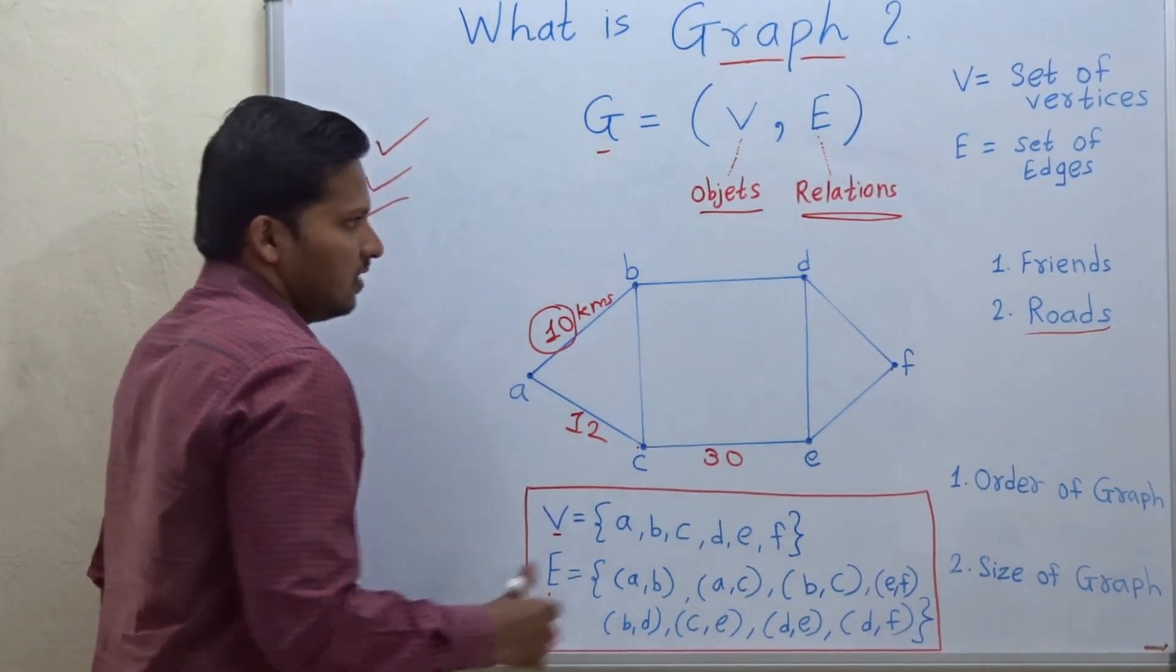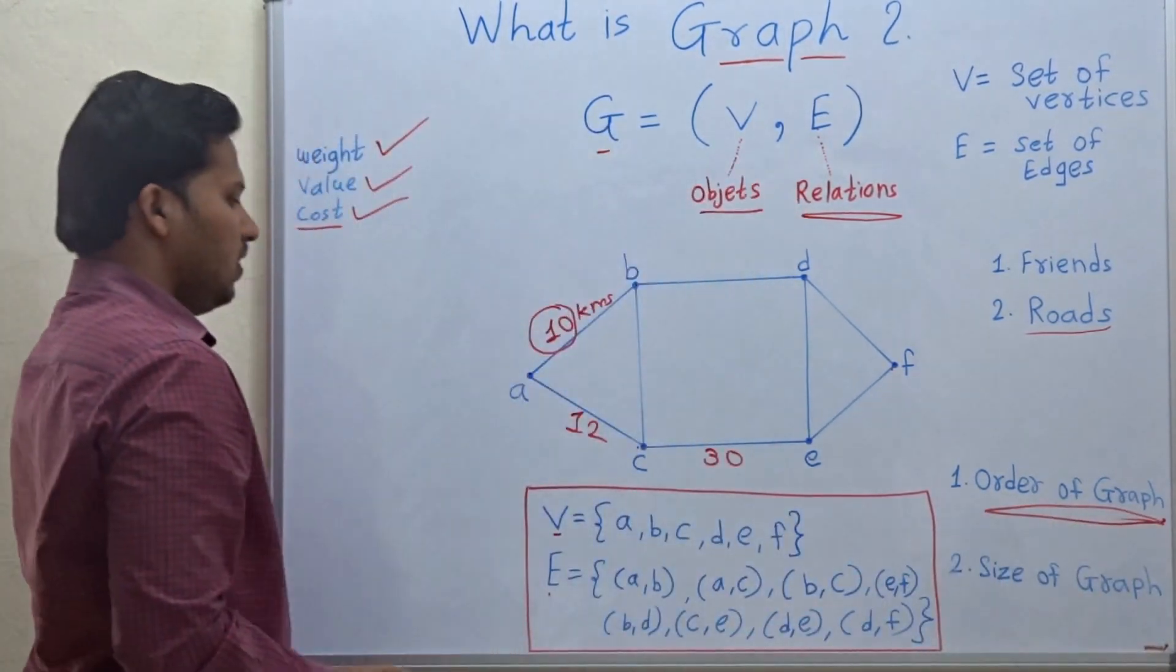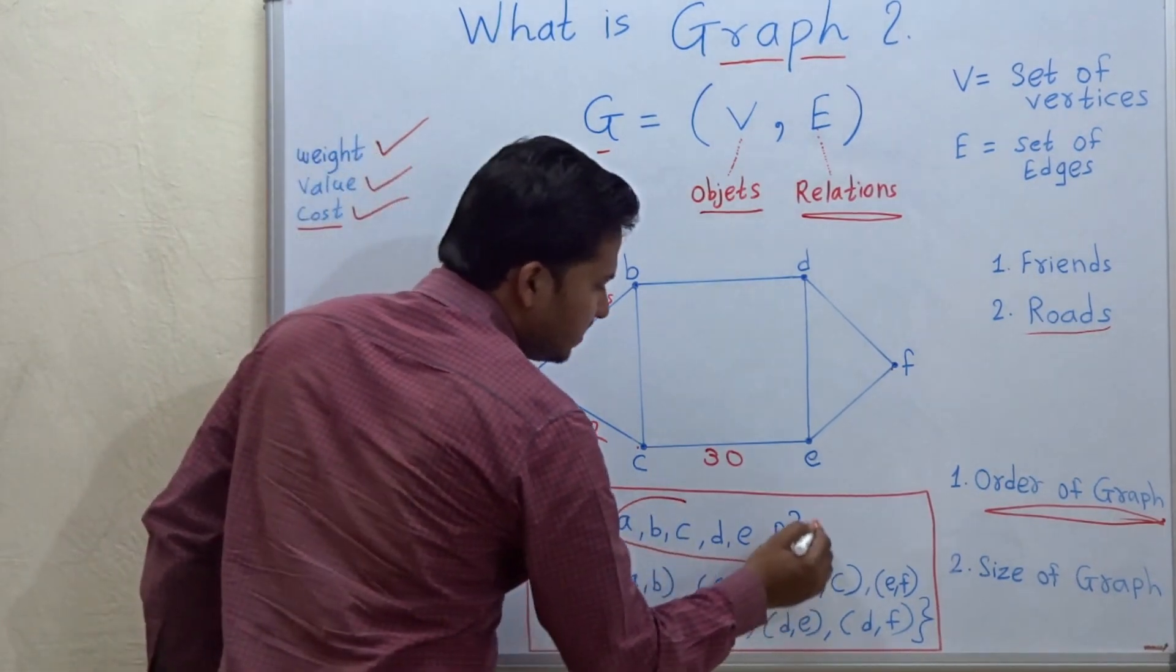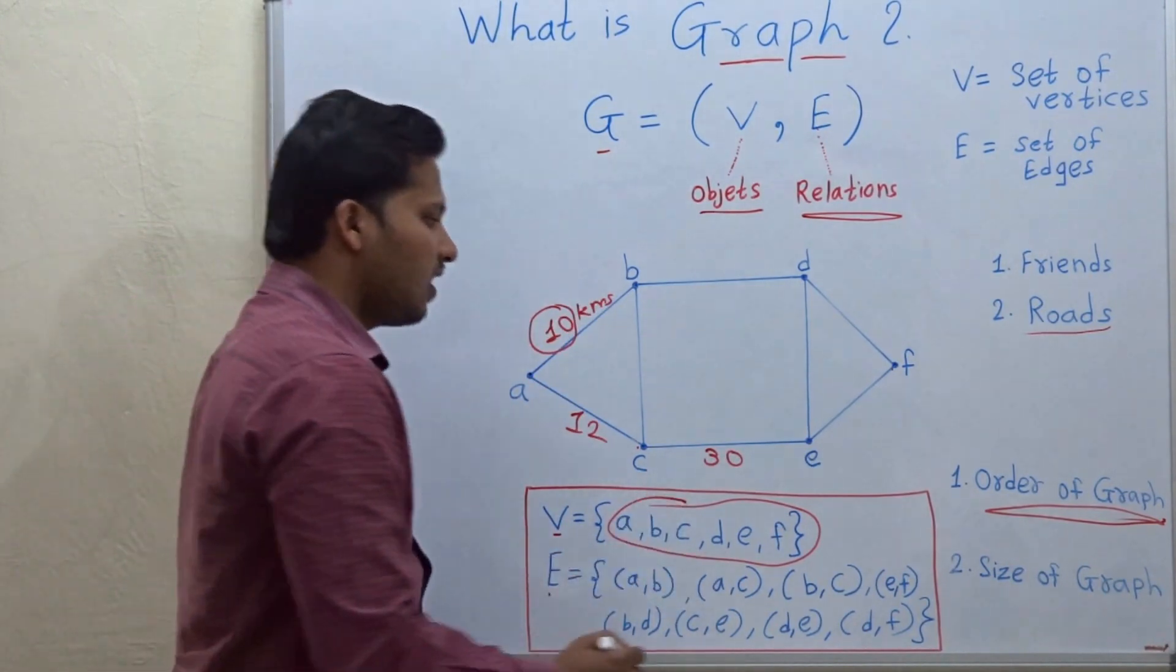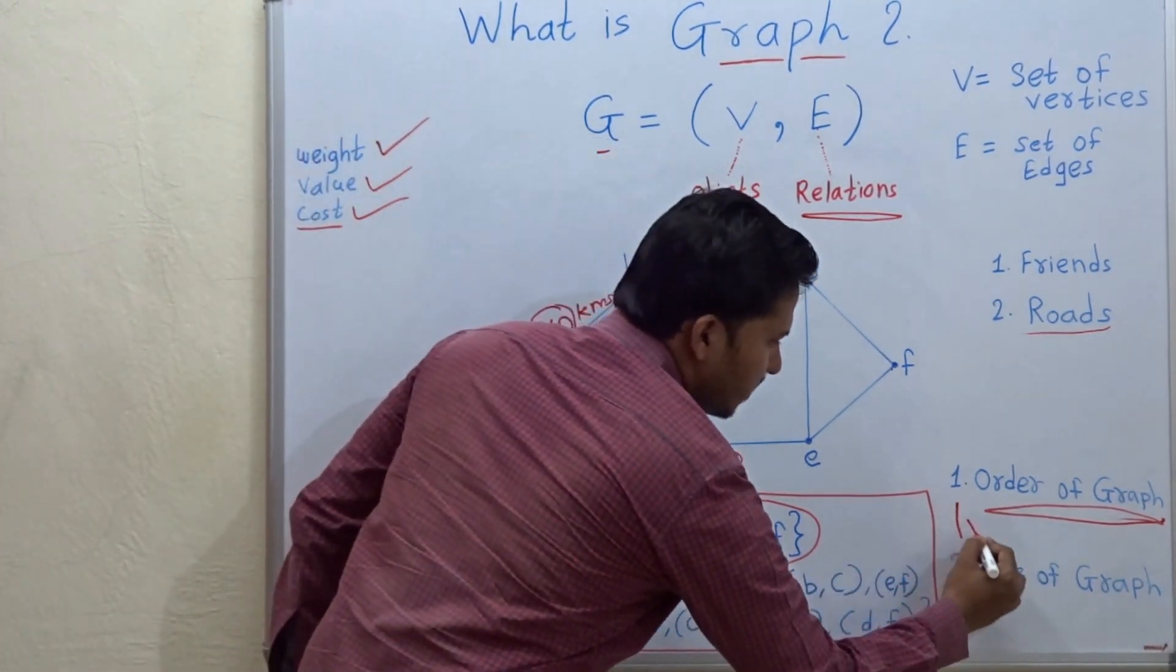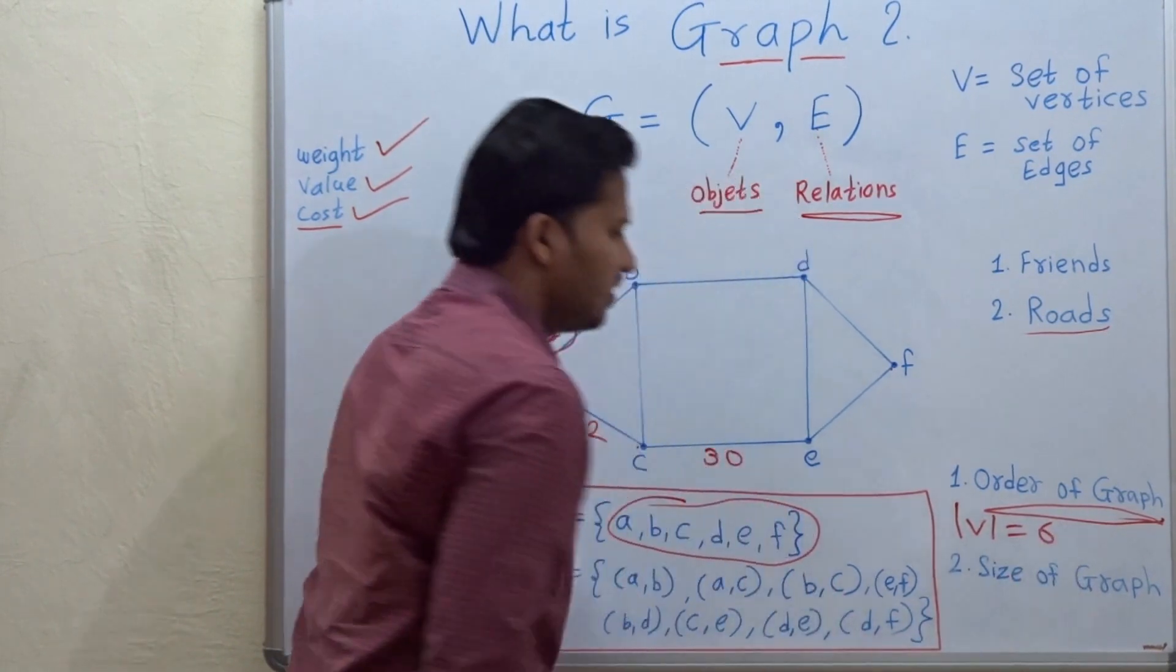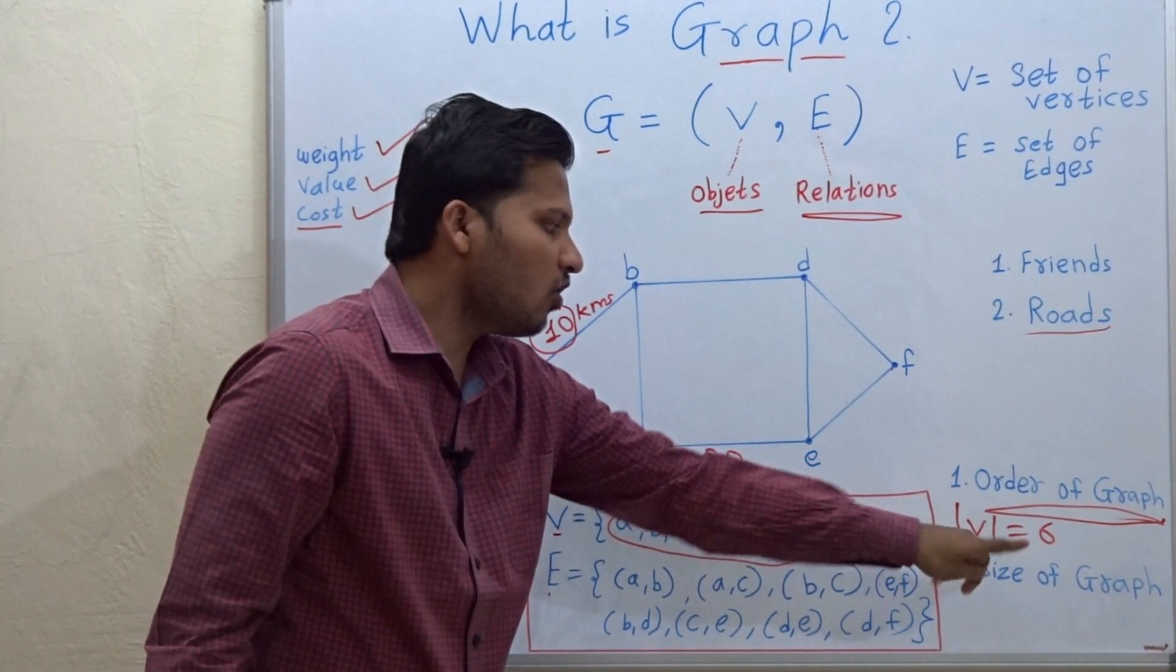Now, we have to see what is the order of a graph. So the order of a graph is the number of vertices in the graph. So here, there are 6 vertices in the graph. The order of the graph is 6. You write the order with this symbol means modulus of V.